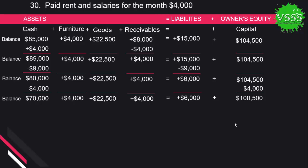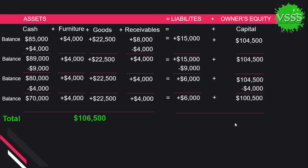We have now entered all transactions. Totaling all balances — cash plus furniture plus goods plus receivable — the total is $106,500. On the right-hand side, we also have the same balance of $106,500. Both sides must be equal because we have passed all entries accurately. This confirms our accounting equation: Assets = Liabilities + Owner Equity.